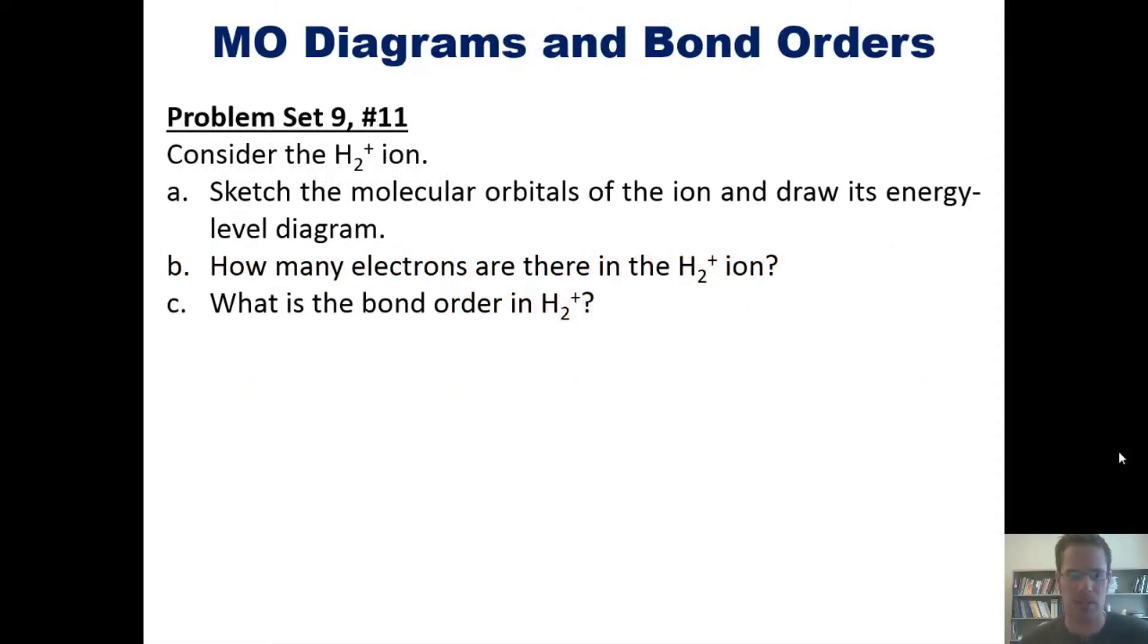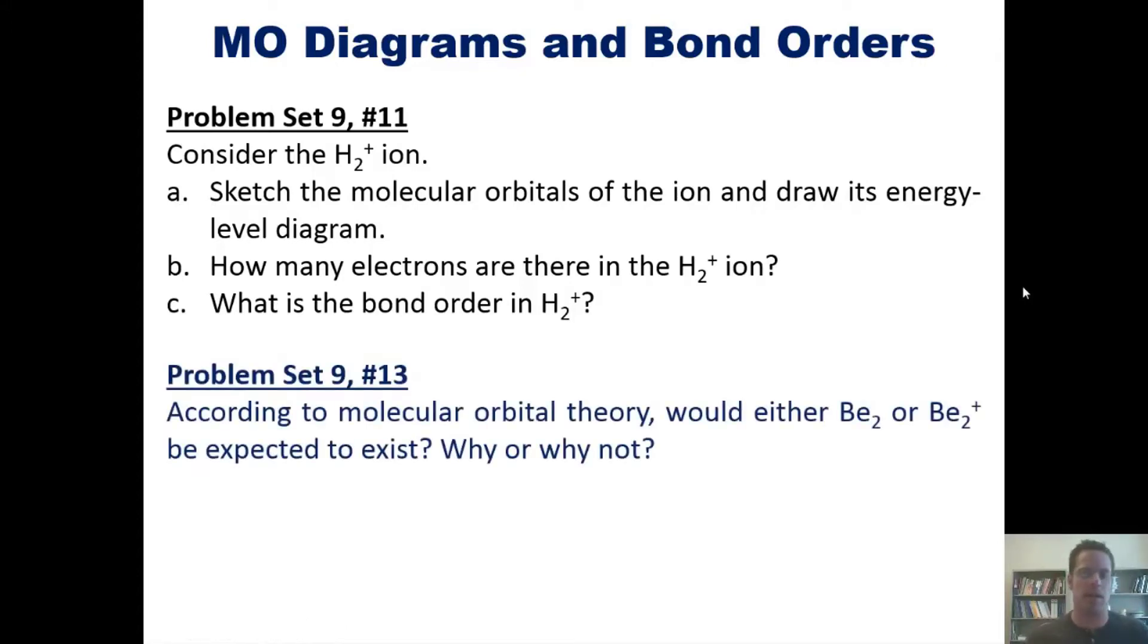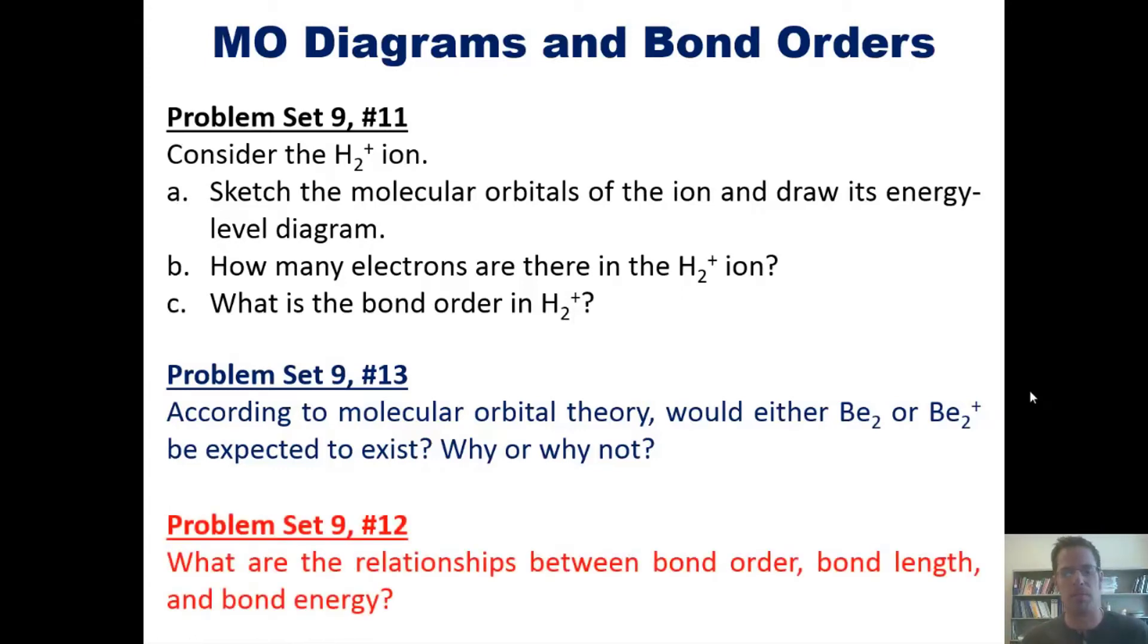So that takes us to some example problems. Consider the H2 plus ion. Sketch the molecular orbitals of the ion and draw its energy level diagram. How many electrons are there in the H2 plus ion? What is the bond order of H2 plus? And then this question. According to molecular orbital theory, would either beryllium 2 or beryllium 2 plus be expected to exist? Why or why not? And this problem. What are the relationships between bond order, bond length, and bond energy?